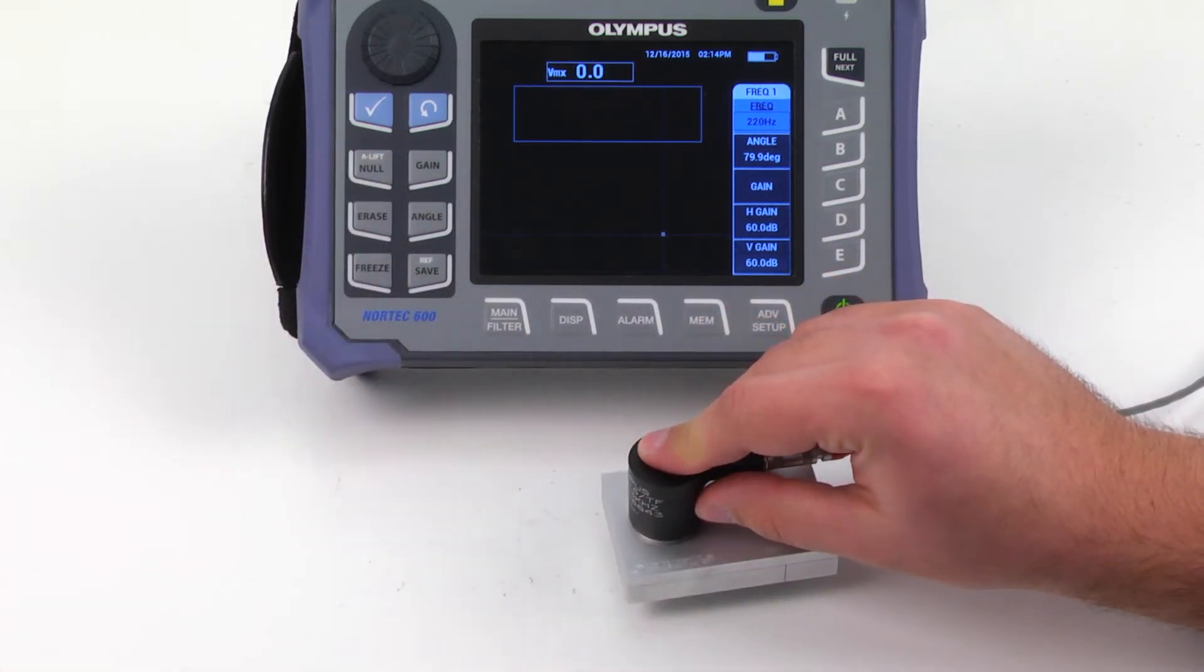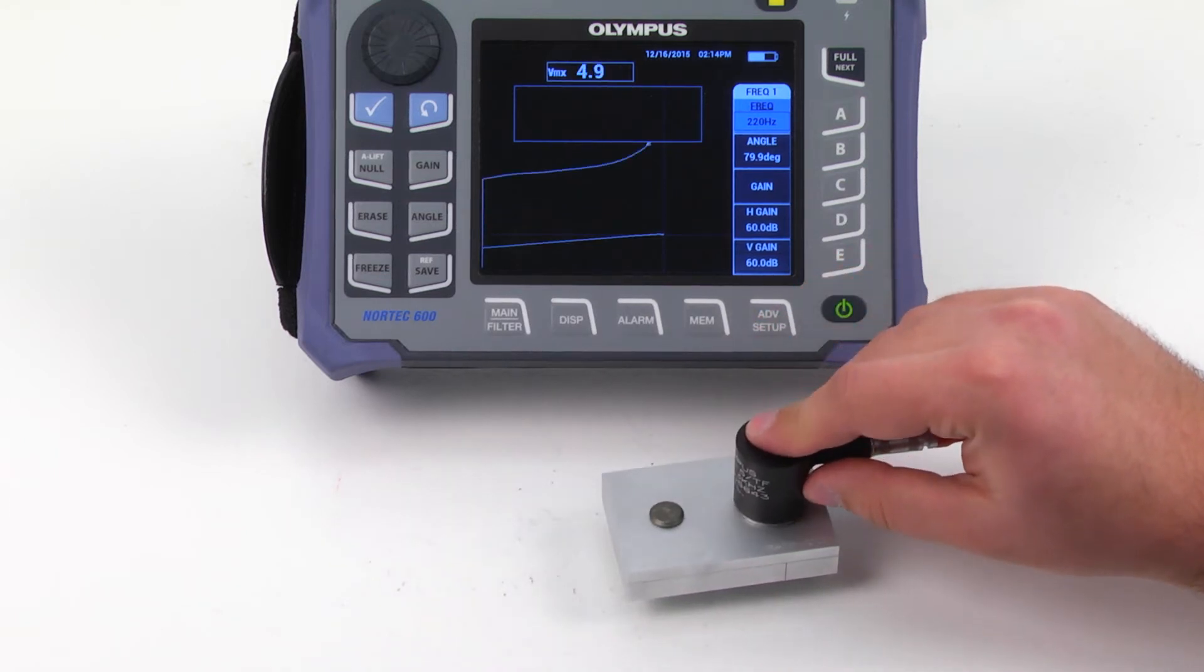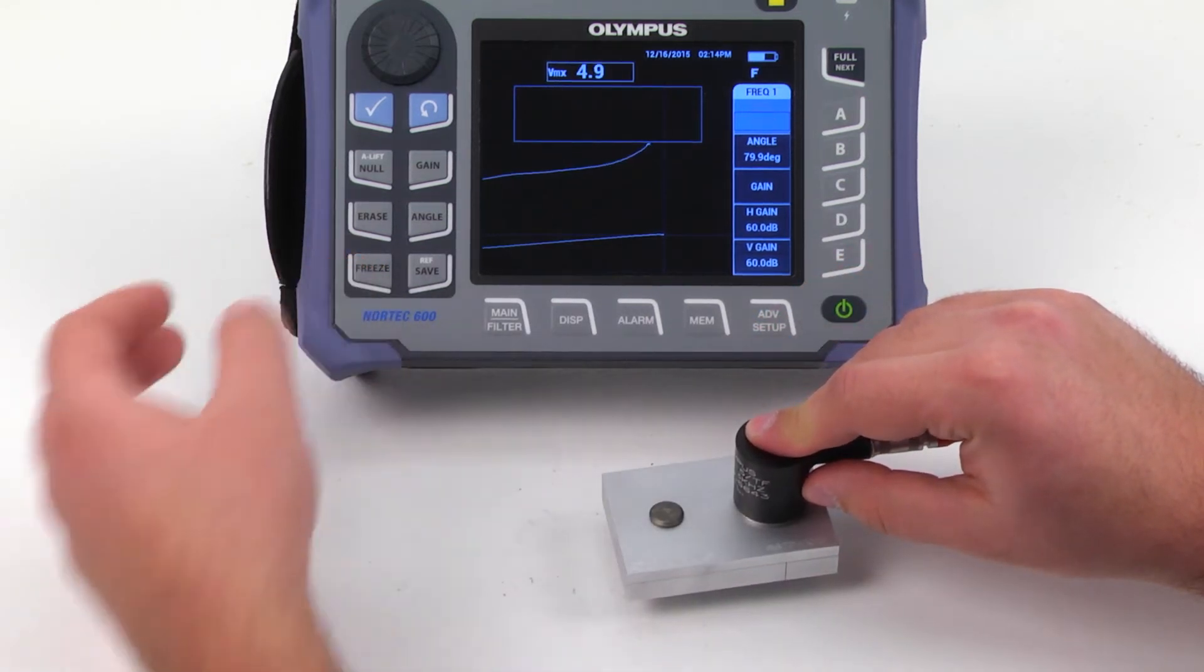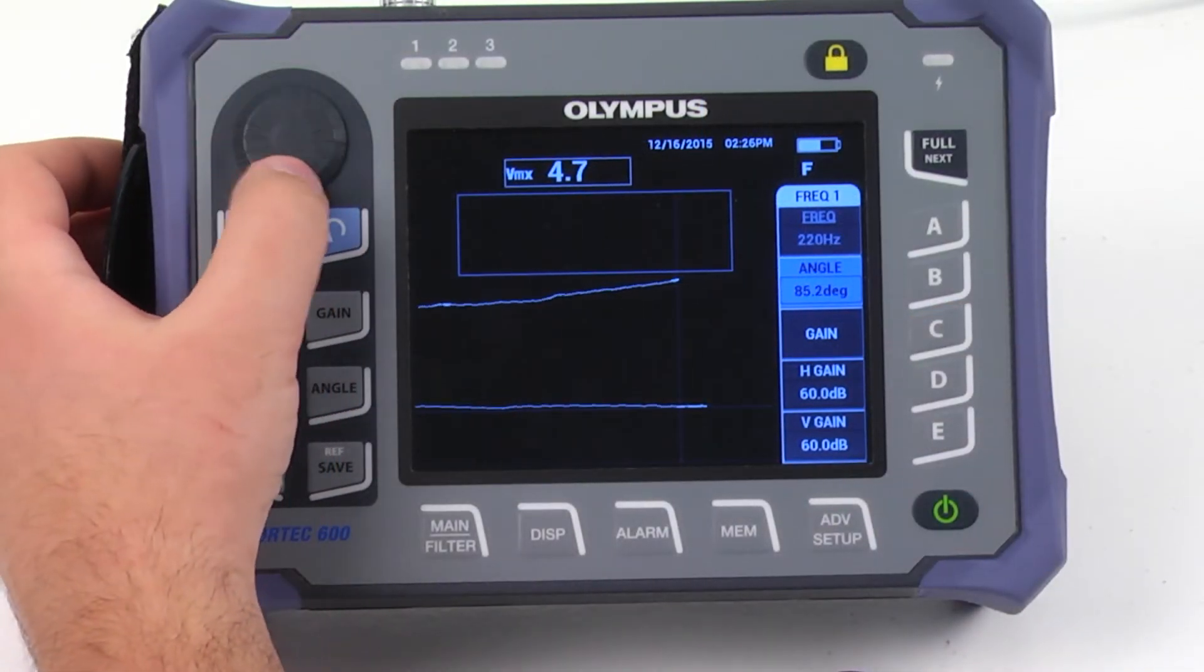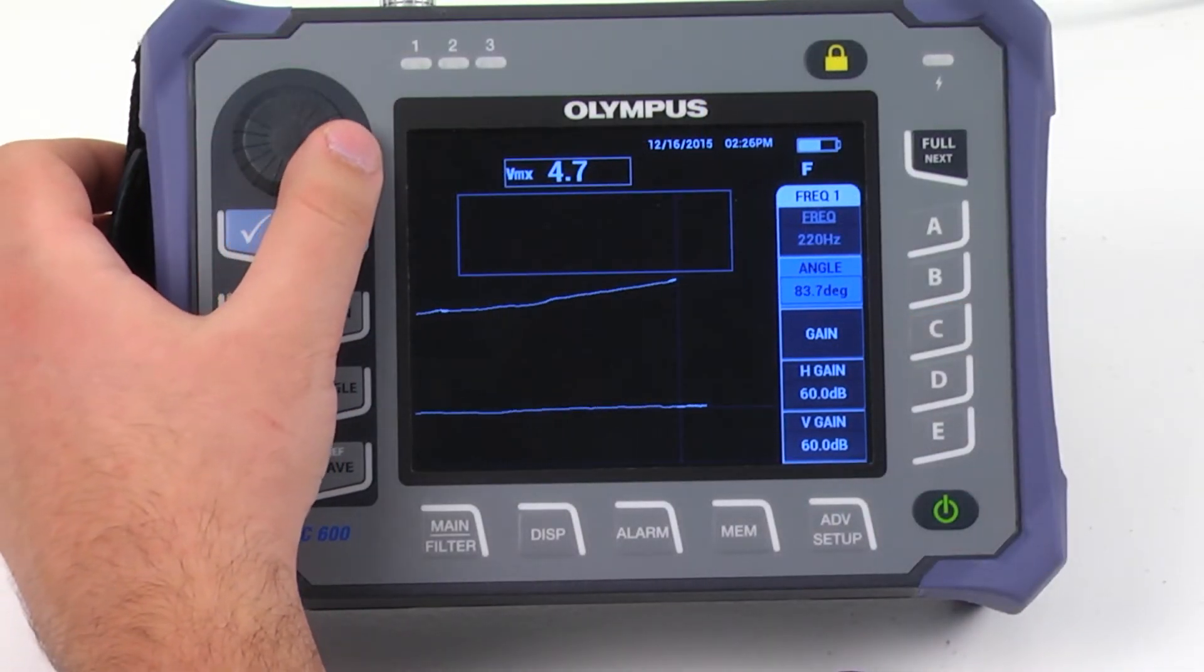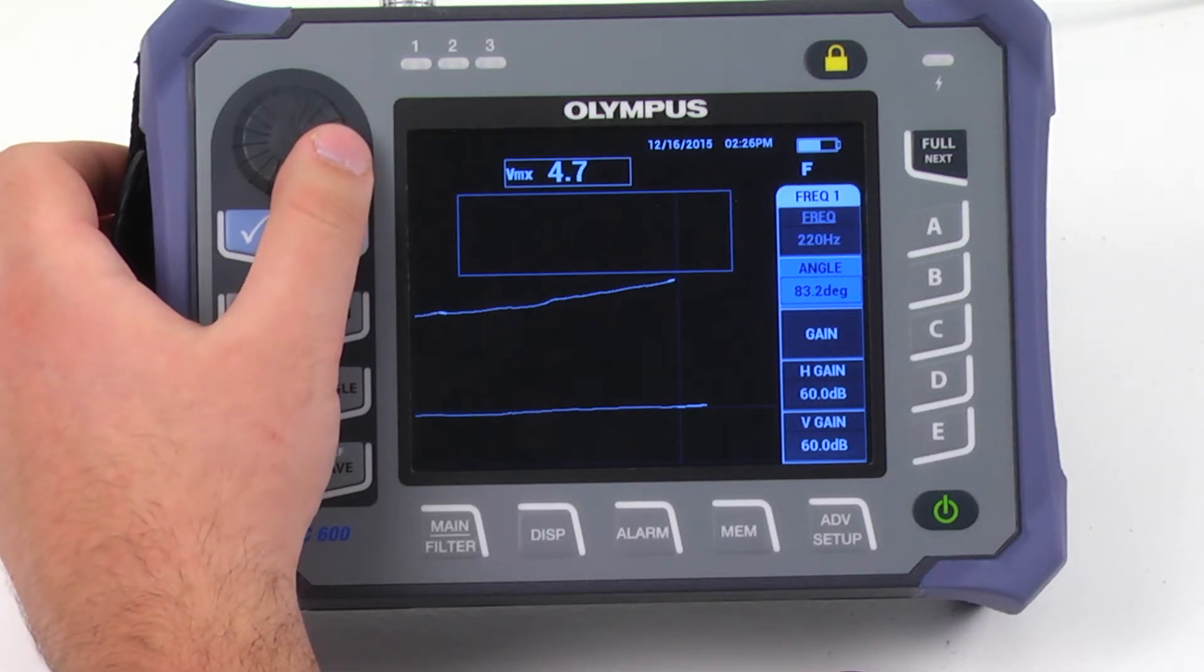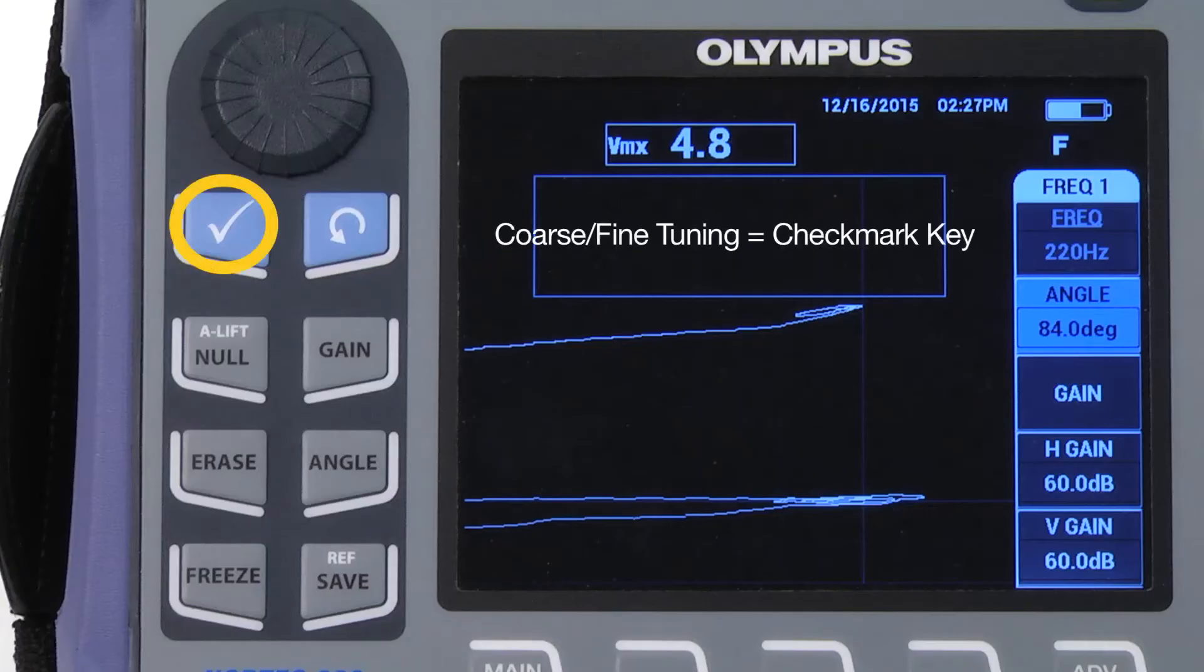Lift the probe and place it over the damaged fastener and press Freeze. Once the screen is frozen, you can change the angle. Try to set the lift off as horizontally as possible. Use the knob to fine tune the angle. To change from coarse to fine tuning, press the checkmark key.